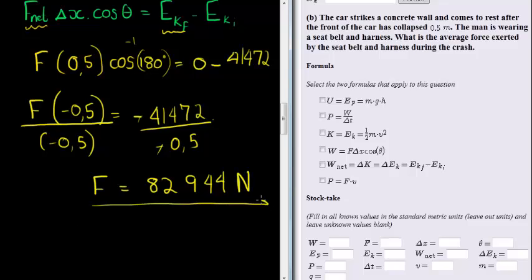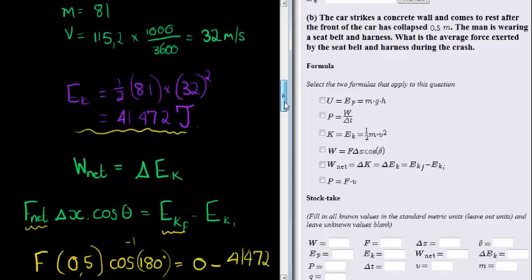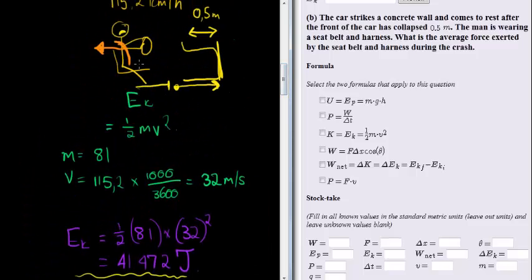82,944 Newtons, I think I'm right. How about you test me? Here we go, 82,944 Newtons, that's the force that this seatbelt is exerting on the man.